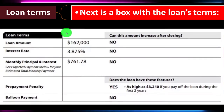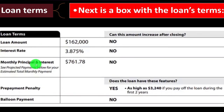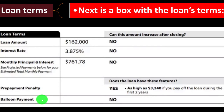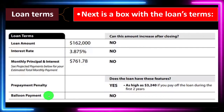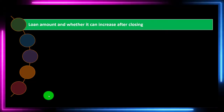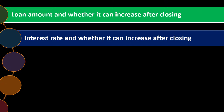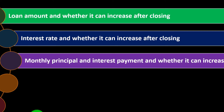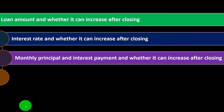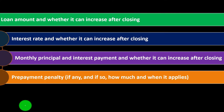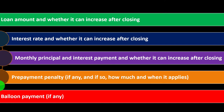Next is a box with the loan's terms: the loan amount, the interest rate, and the monthly principal and interest payment. There is also a note on any prepayment penalty and balloon payment if applicable. A balloon payment would be a more unusual type of loan. For a standard loan, the answer is typically no balloon payment.